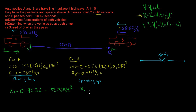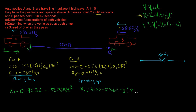The equation for X_B: the location of B equals an initial position of 3200, plus its initial velocity of negative 58.6 times T, plus one-half times the acceleration of negative 0.837 times T squared.